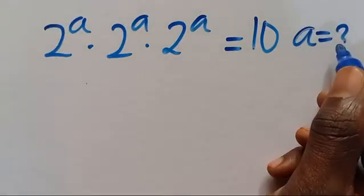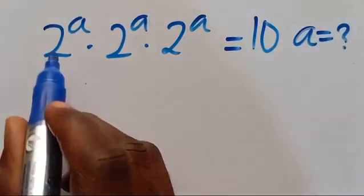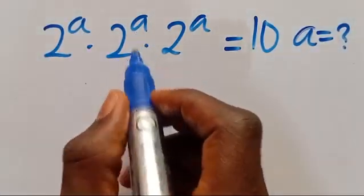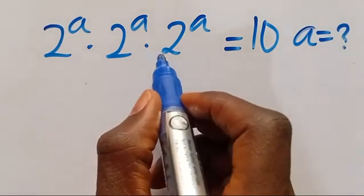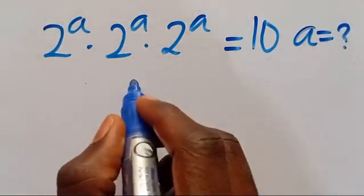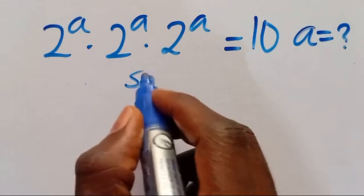What is the value of a, given that 2 to the power of a, multiplied by 2 to the power of a, multiplied by 2 to the power of a, equals 10? So let's find the solution.